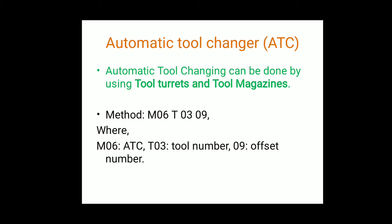The next point is ATC — Automatic Tool Changer. Automatic tool changing can be done using either a tool turret or a tool magazine. Compared to the tool magazine, the tool turret is the better option; its only disadvantage is the limited number of tool stations. The method for tool changing in the CNC part program uses M06 for the tool change command and T-number for the tool number, for example M06 T03.